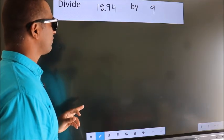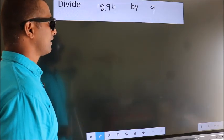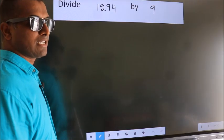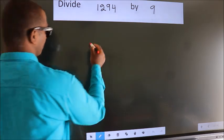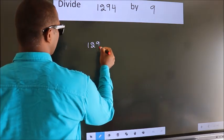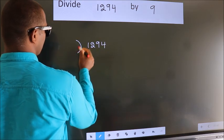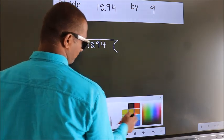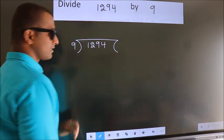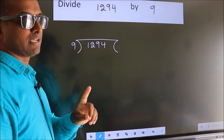Divide 1294 by 9. To do this division, we should frame it in this way. 1294 here, 9 here. This is your step 1.